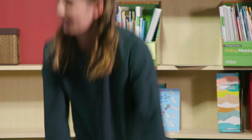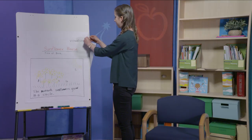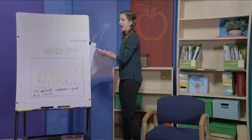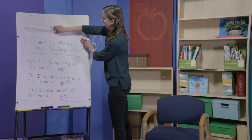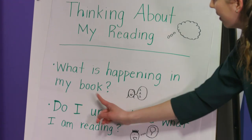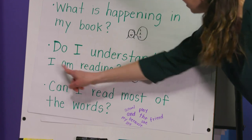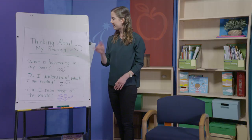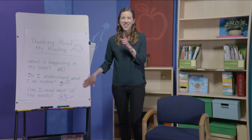Last thing we're going to do today together is talk a little bit more about our independent reading. Remember, good readers are always thinking about what they're reading and practicing visualizing. We're looking at our 'thinking about my reading' chart. Good readers think: What is happening in my book? Do I understand what I am reading? Can I read most of the words? You think about this all the time when you're reading and that makes you all such good readers.